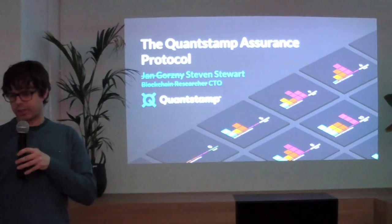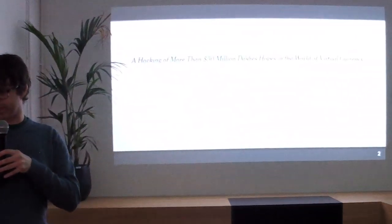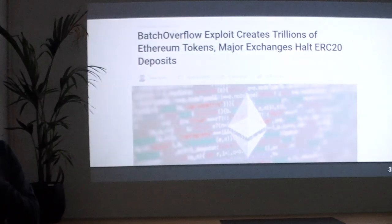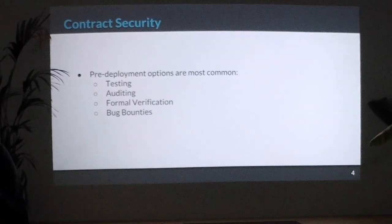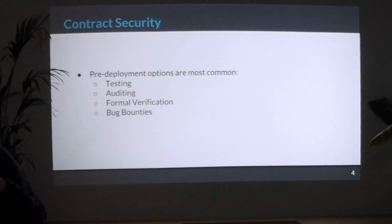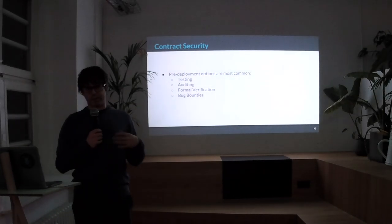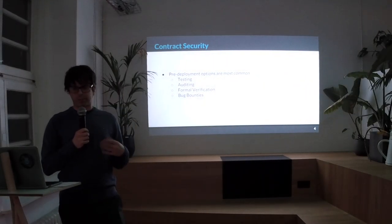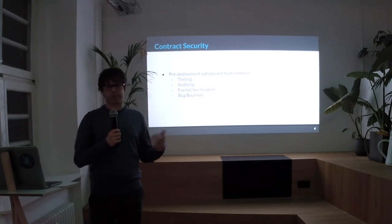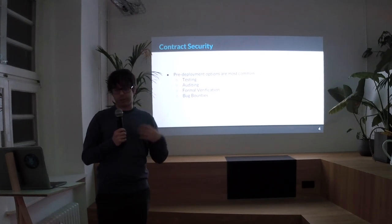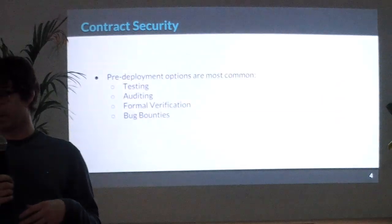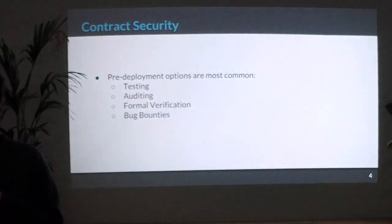Jan is a blockchain researcher and he would normally be doing this. There's lots of motivation for caring about security. Given the situation where once you deploy your code it's immutable, when you're thinking about contract security, you usually think about pre-deployment options: your conventional testing, auditing — Quantstamp does code audits as a service — formal verification, and bug bounties.